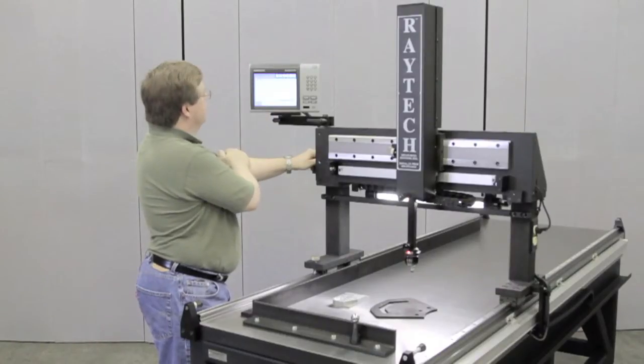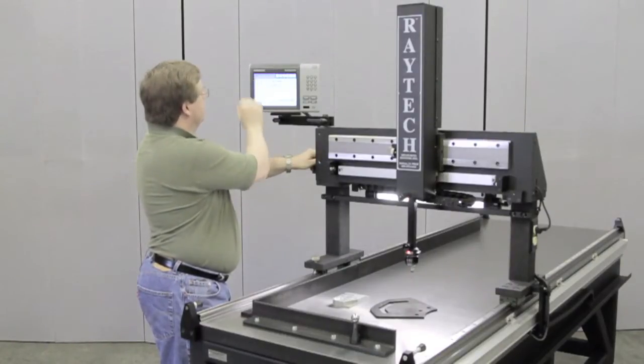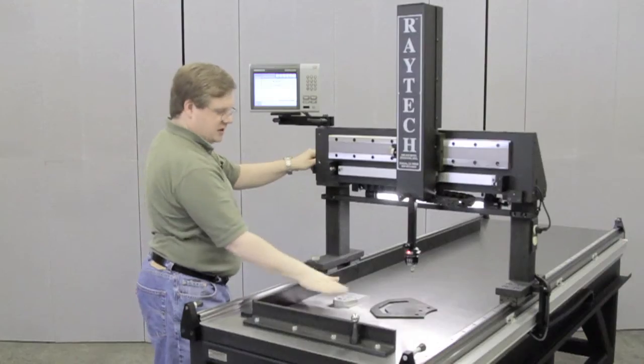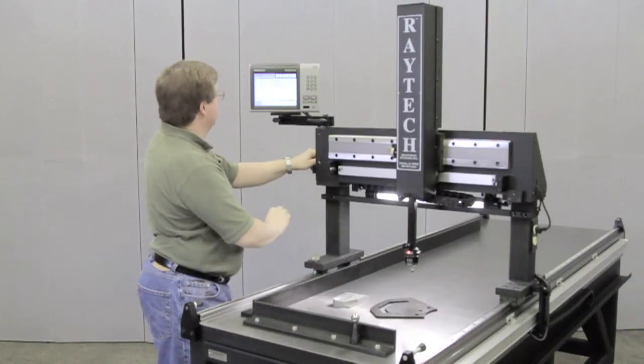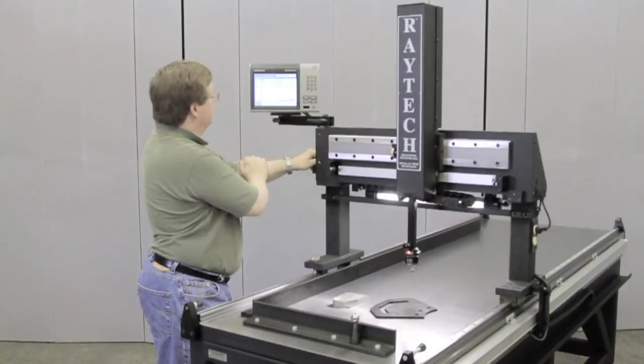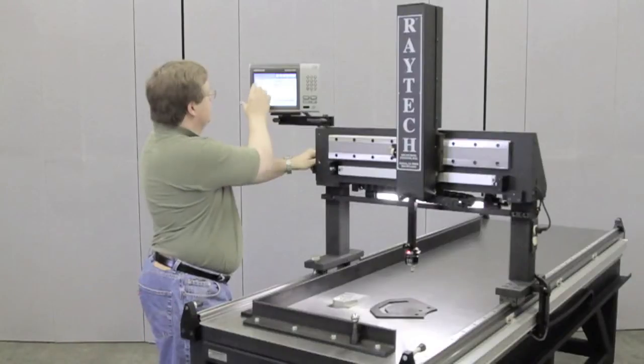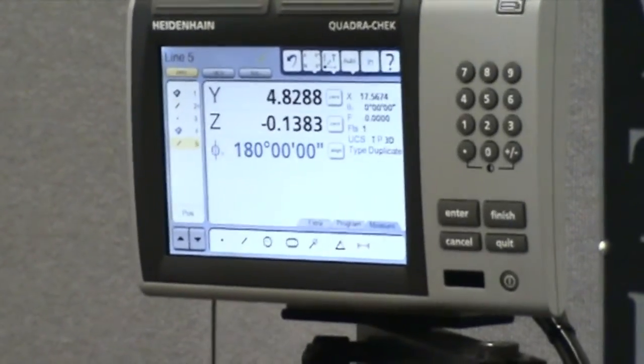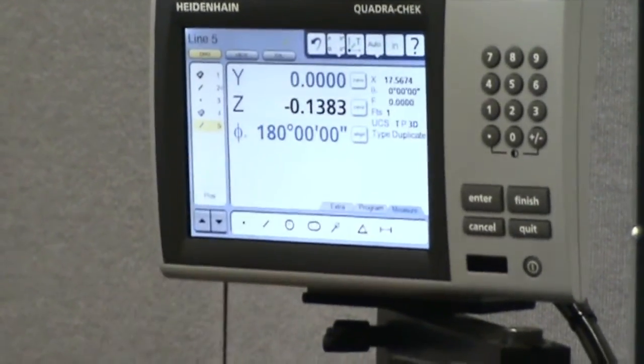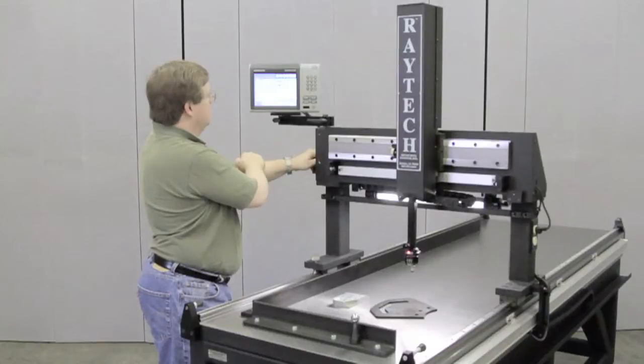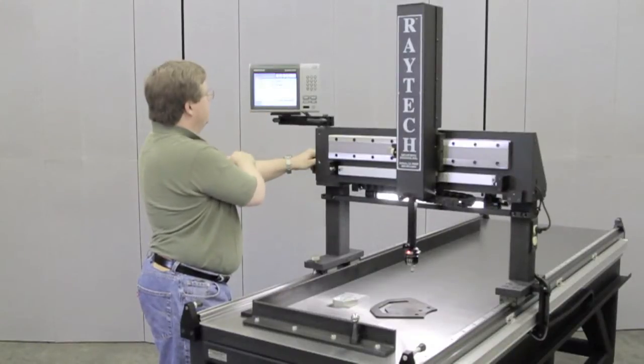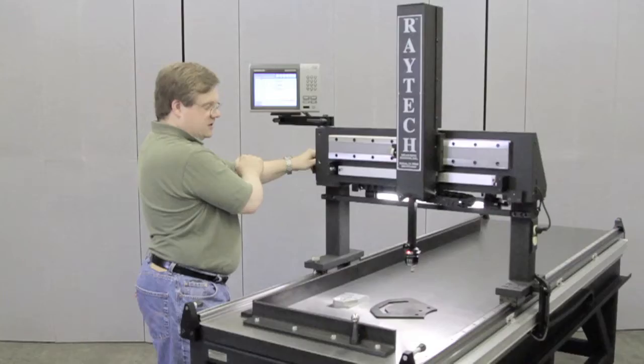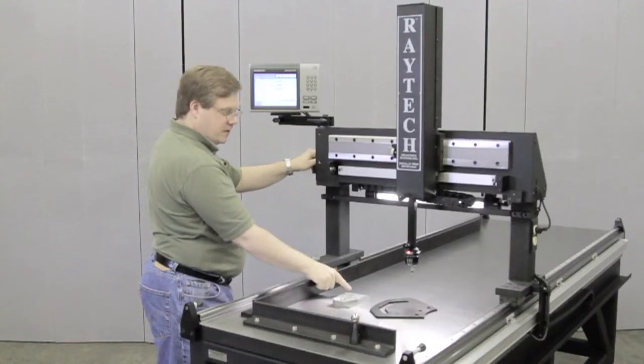We can take that plane that we started with, go to the readout, and align that so now it's flat. We'll make that our z-axis zero location. We'll go to that edge we measured, align that, and make that our y-axis zero location.